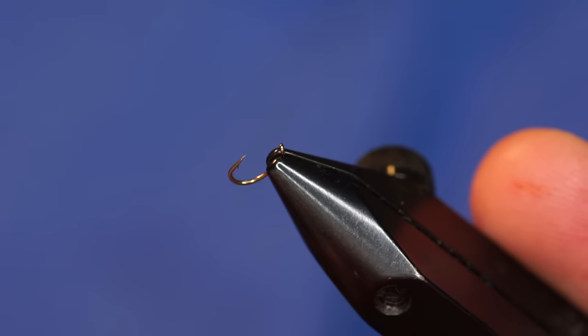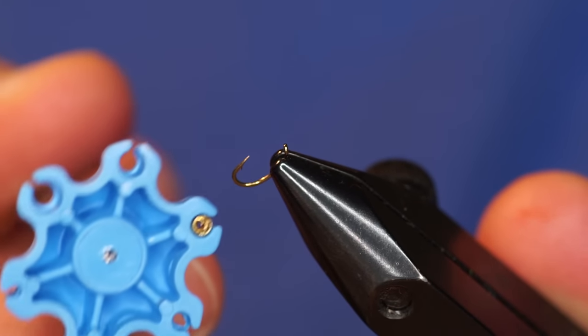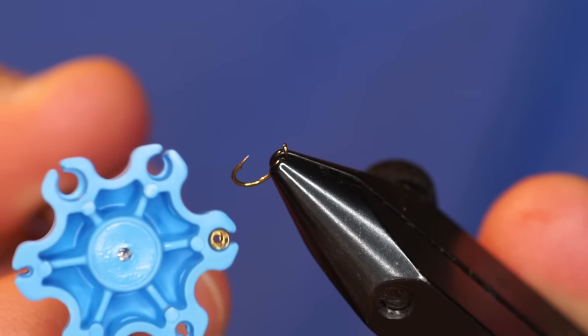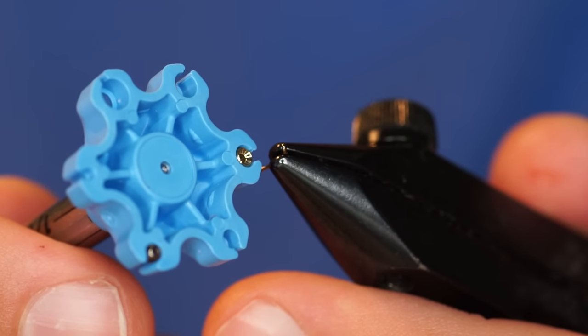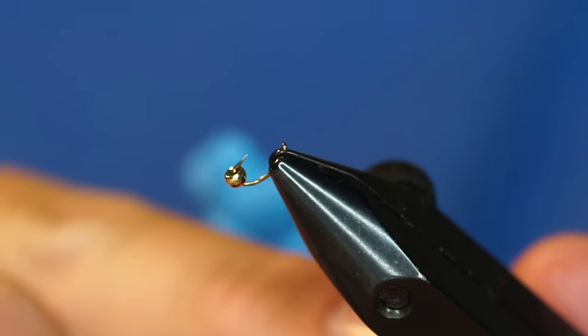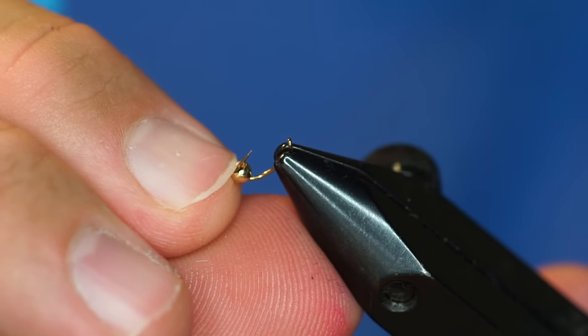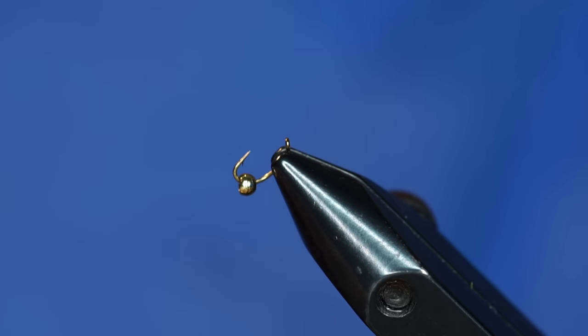I've got a 2.4mm bead that I'm going to put on, with the small hole in the bead ready to go on the hook first. Just like that. See how that's kind of hanging up right there? If I just take my finger and pop it, it will get right in place.